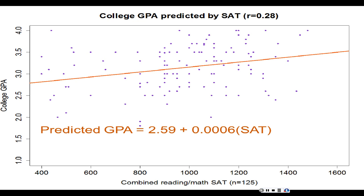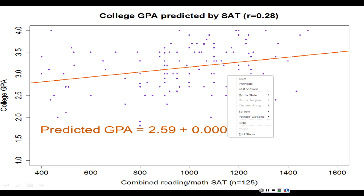The relationship with GPA isn't the strongest in the world. The equation is: predicted GPA = 2.59 + 0.0006 × SAT. This coefficient has to be very small because the SAT numbers are large — you have to multiply by a very small fraction to bring them down to a GPA scale.